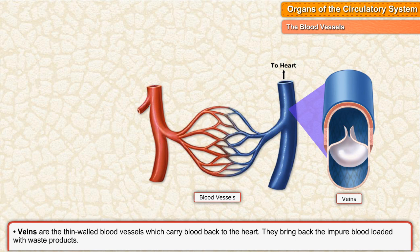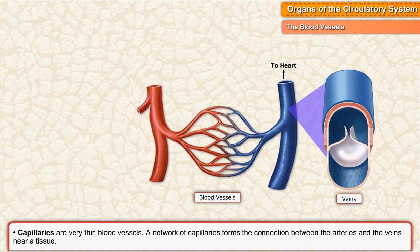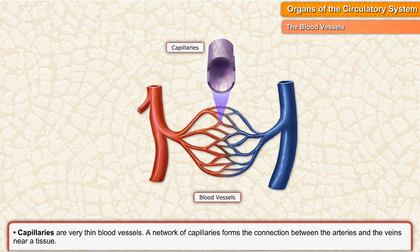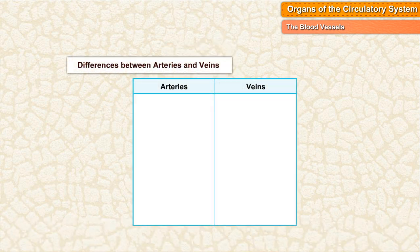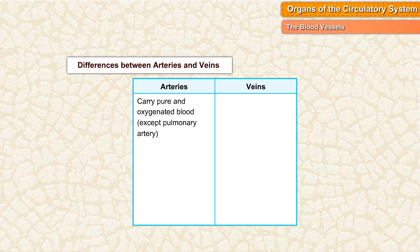Veins are thin-walled blood vessels which carry blood back to the heart. They bring back the impure blood loaded with waste products. Capillaries are very thin blood vessels. A network of capillaries forms the connection between the arteries and the veins near a tissue.